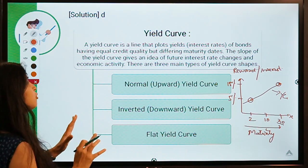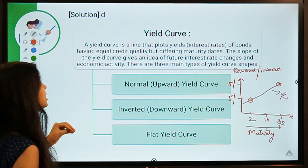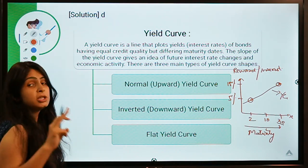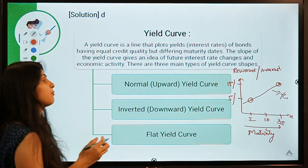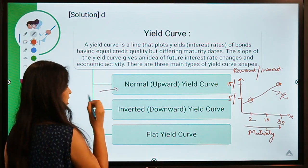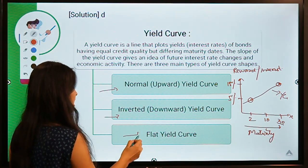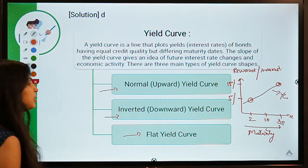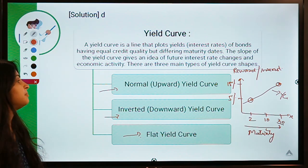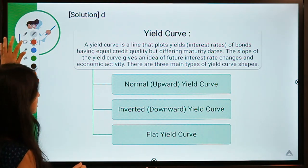Now that we understand the meaning of a yield curve, we are going to study three types: the normal curve (also called upward), the inverted curve (downward), and the flat yield curve.